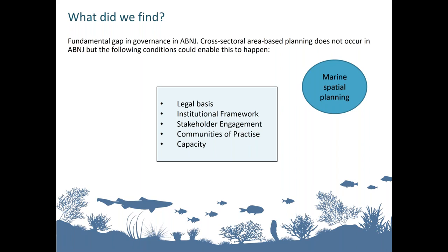Secondly, institutional framework: activities in ABNJ are currently governed under a sectoral approach, whereby specific activities are controlled by their respective sectors with limited or no consideration for other sectoral activities. As such, there is no single institution or organization with the mandate or responsibility to address multi-sectoral issues or to undertake cross-sectoral planning.